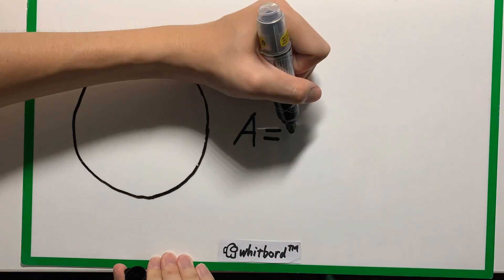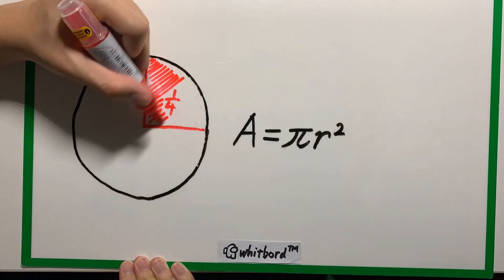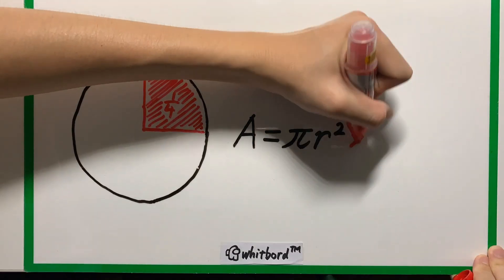We know that the area of a circle is πr². Now I want you to go back to your primary school days and think of the sector as a fraction of the circle, just like a pie chart.